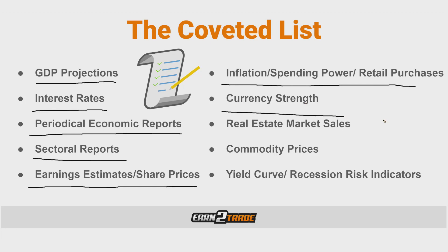Then we have currency strength, which is fairly self-explanatory. It is a lagging indicator that can also be attributed in some ways to the leading category. Currency strength is a significant signal of an economy's stability and usually changes in response to political and economic circumstances — essentially determining how far a single dollar, or whatever currency metric we're measuring, will go.